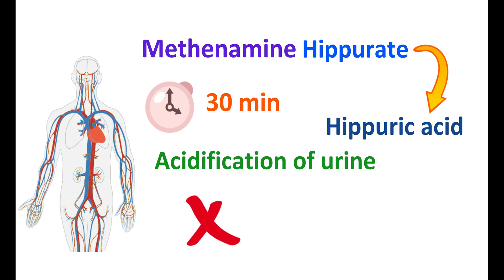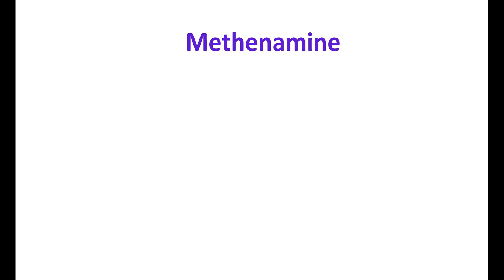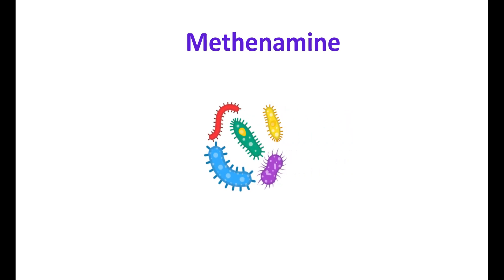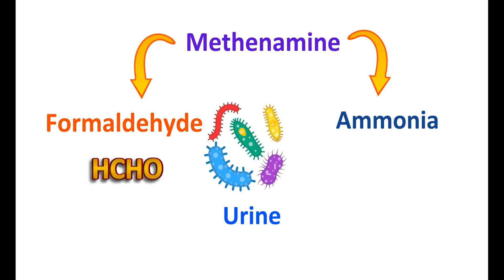Methenamine has no effect on systemic bacterial infections. It requires hydrolysis to show its antibacterial action, and it is mainly hydrolyzed within the urine. It is split into two parts: formaldehyde and ammonia. Formaldehyde has non-specific antibacterial activity, so it reduces bacterial activity against both gram-positive as well as gram-negative infections.